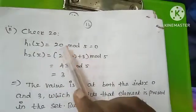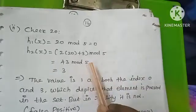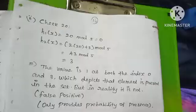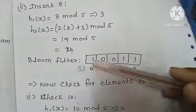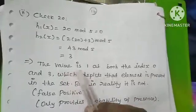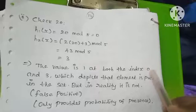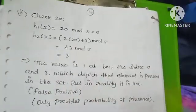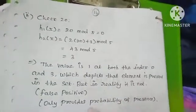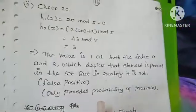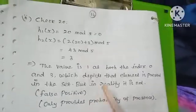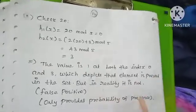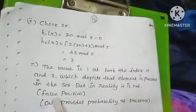Next, we check x = 20. The value at positions 0, 1, 3 are checked. The result is 1, 1, 1, meaning all bits are 1 and the element is present. This is reality — we had inserted elements 10 and 8. The element appears as present, which is a true result.